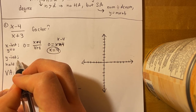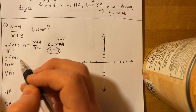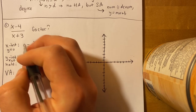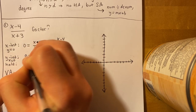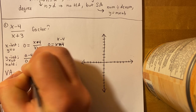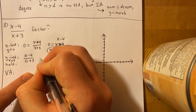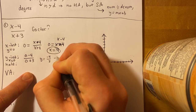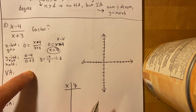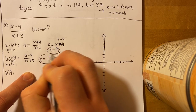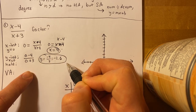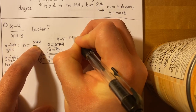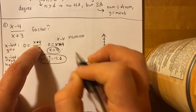Now for the y-intercept, we make x equal to zero. So we have (0 − 4) over (0 + 3), which gives us y equals negative 4/3, about negative 1.6. So we have our x-intercept and our y-intercept. A quick tip: for the x-intercept, just set the numerator equal to zero.